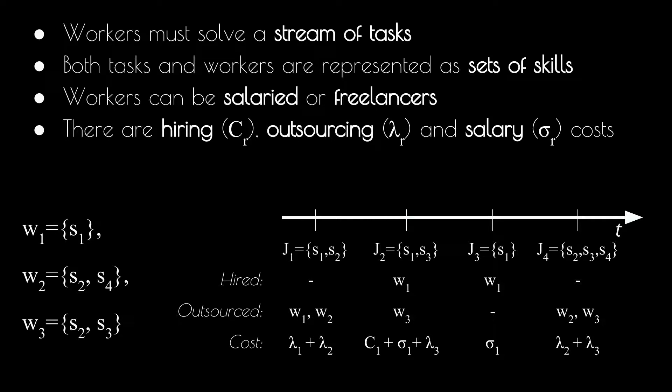Considering the cost we have incurred, could we have done a different sequence of hiring and outsourcing decisions? What is the most cost-effective way of making these decisions if we don't know the future?